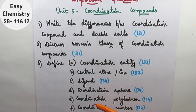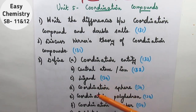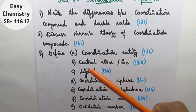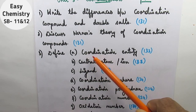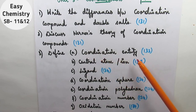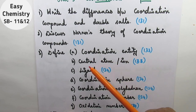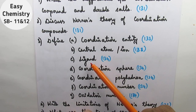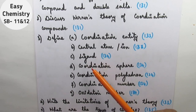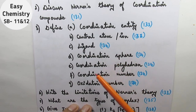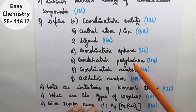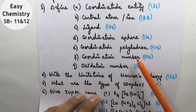The important terms used in this particular branch — that terminology is written. First one: coordination entity, central atom or ion, ligand, coordination sphere, coordination polyhedron, coordination number.